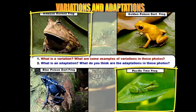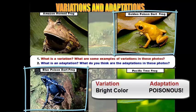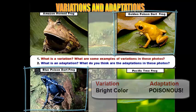However, body color works differently for the poison dart frogs. Bright yellow or bright blue isn't great for camouflage on land, but these colors are adaptations that help these frogs survive because bright colors in poison dart frogs mean they are highly toxic. Predators have learned over hundreds and thousands of years of evolution that these bright colors are warning signals of high toxicity.